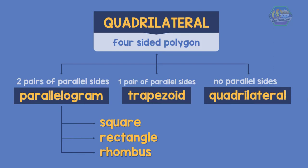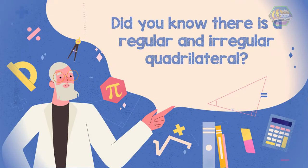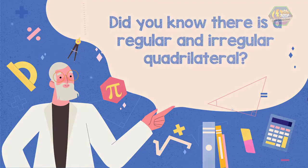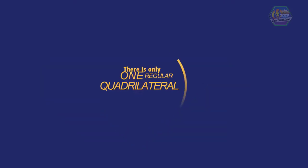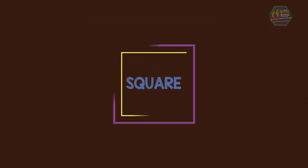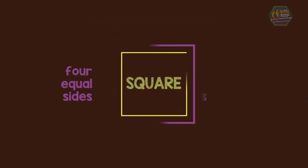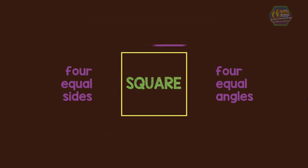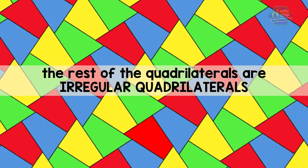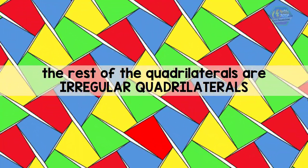Now let me give you a quick trivia. Did you know there is a regular and irregular quadrilateral? There is only one regular quadrilateral and it is the square, because it has four equal sides and four equal angles. Therefore, the rest of the quadrilaterals are called irregular quadrilaterals.